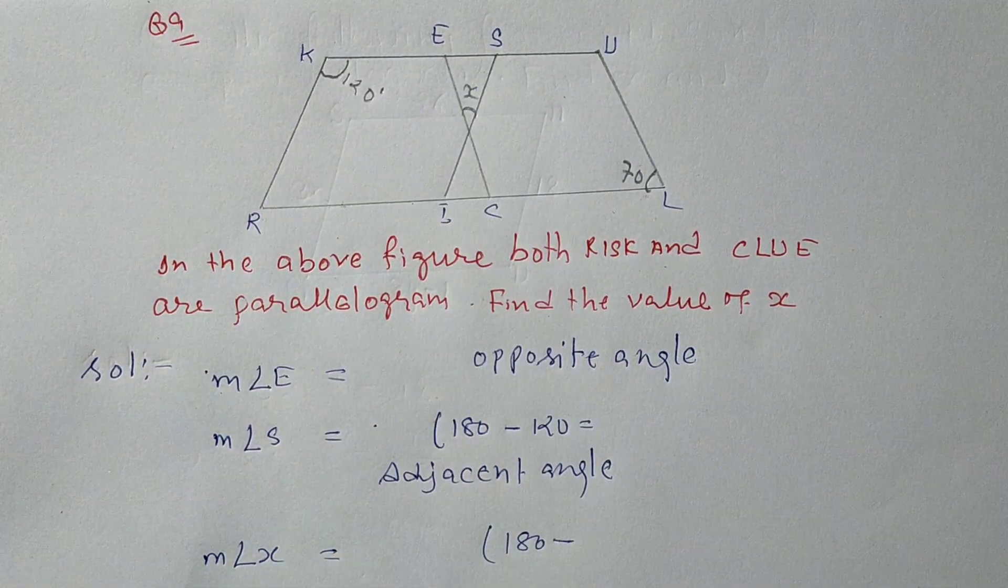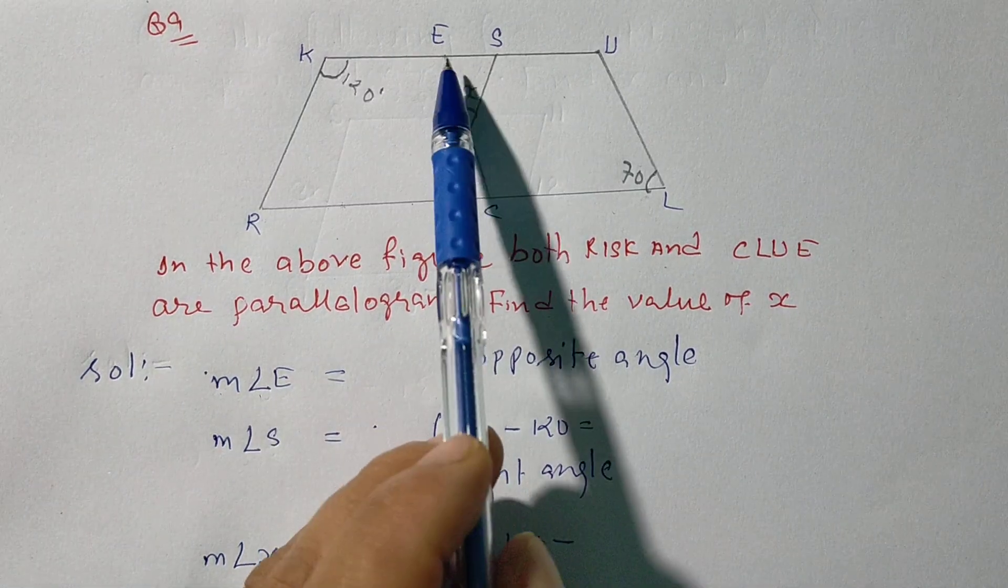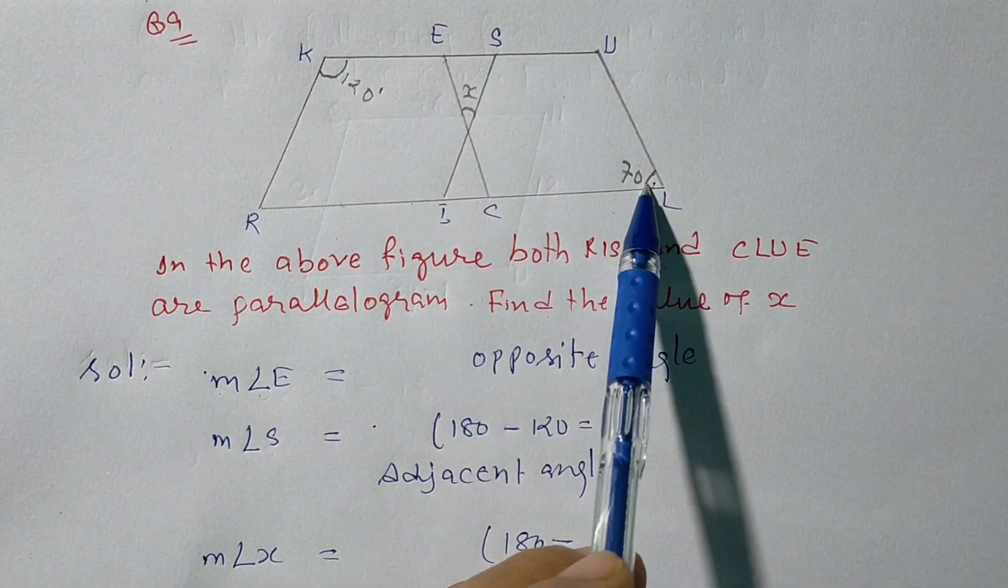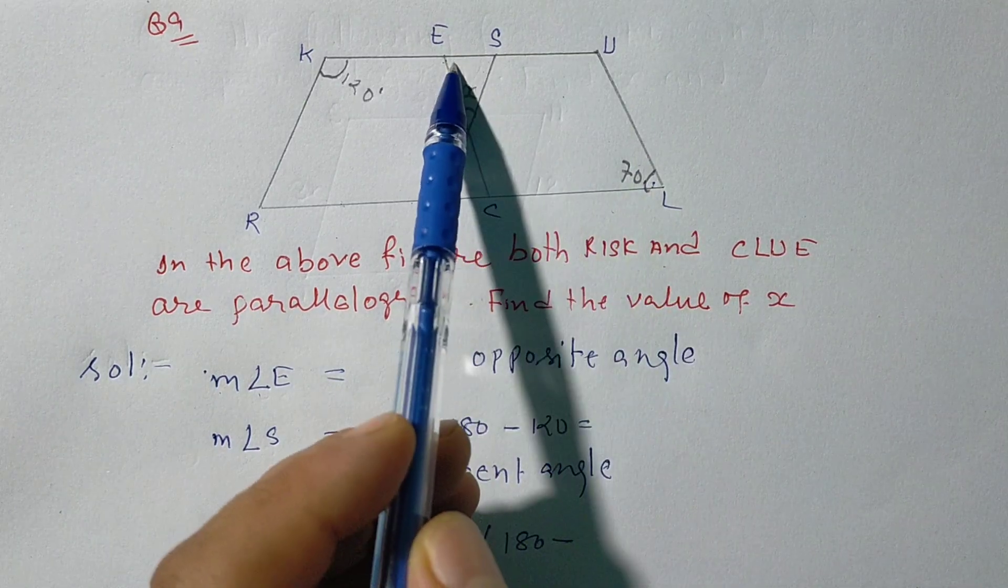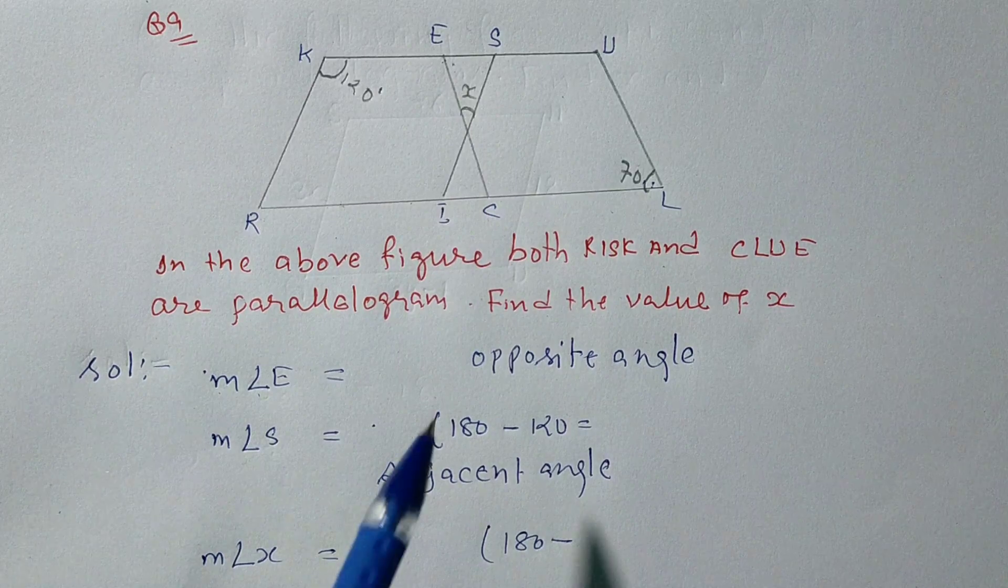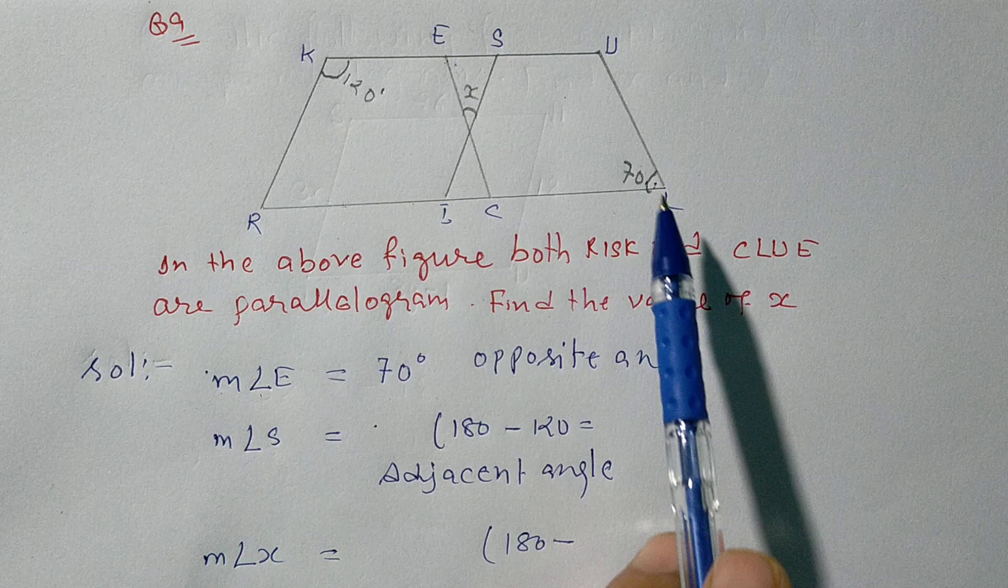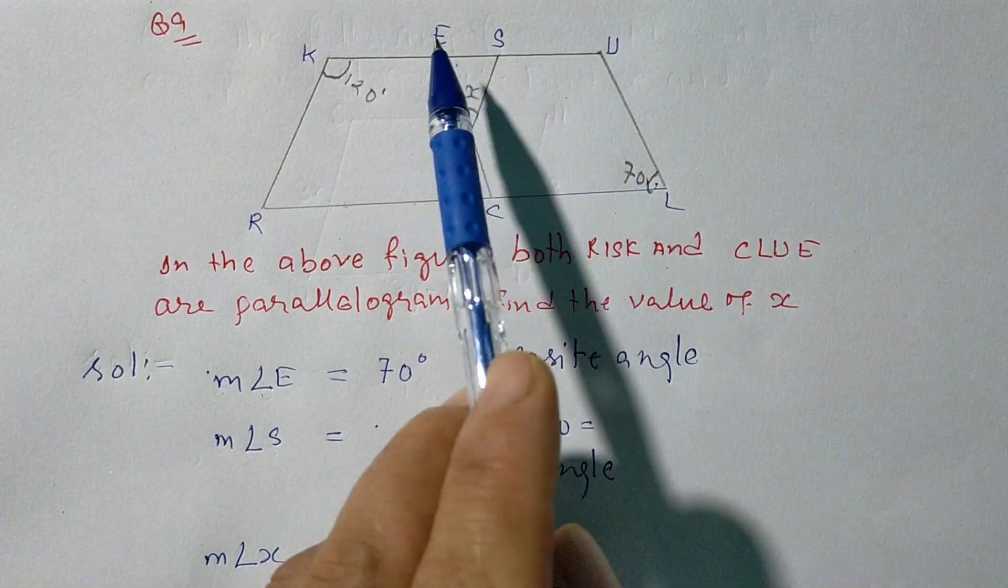Find the value of X. So here we have X value. Measure angle E. This is opposite angle, 70 opposite in the parallelogram. So opposite angles are the same measurement. So angle E is 70 degrees because this opposite is this. So 70 is angle E.